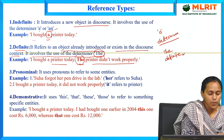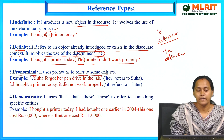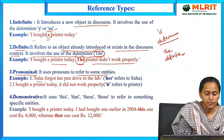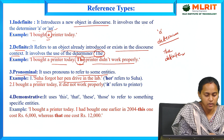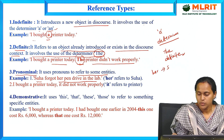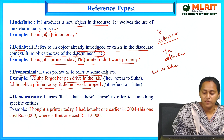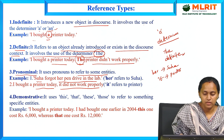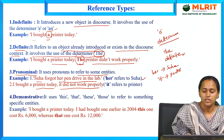Pronominal reference uses pronouns to refer to some entity. For example: 'Suha forgot her pen drive in the lab.' Here, 'her' refers to Suha. Another example: 'I brought a printer today. It did not work properly.' Here, 'it' refers to the printer. In pronominal reference, we use pronouns instead of repeating the entity name.